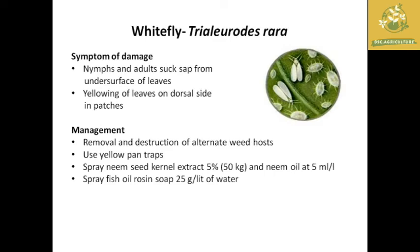The next pest is whiteflies, with scientific name Trialeurodes rara. Nymphs and adults suck sap from the undersurface of leaves, and yellowing of leaves on the dorsal side in patches is the major symptom. Management includes removal and destruction of alternate host plants, use of yellow pan traps, spray of neem seed kernel extract 5%, neem oil at 5 ml per liter, and fish oil rosin soap at 25 grams per liter of water.